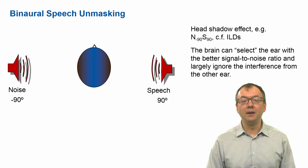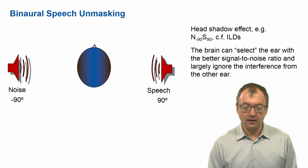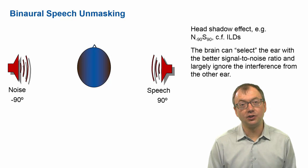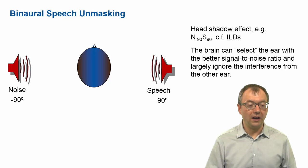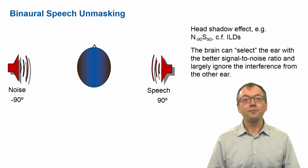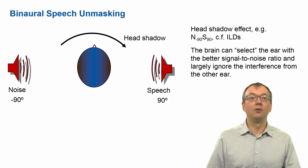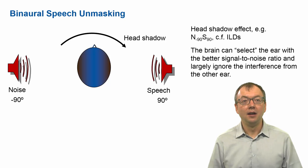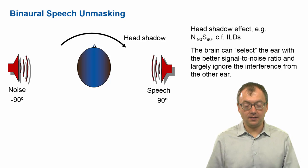In many natural listening situations, speech and noise don't come from the same location, so we have these binaural benefits. Interestingly, models show that the brain can select — on a short time basis — the ear with the better signal-to-noise ratio and ignore interference from the other ear, switching between ears wherever the best information is. In a situation with a strong head shadow, the noise is attenuated and the brain picks the ear towards the speech, benefiting from better SNR and gaining more than 10 decibels SRT improvement.